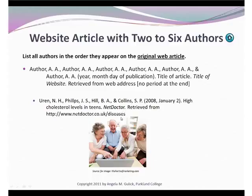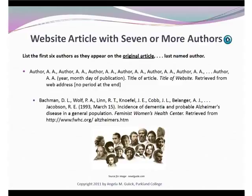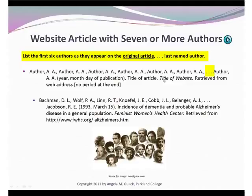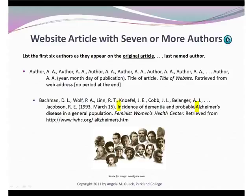What happens when you have a website article written by more than seven people? You provide the first six names that are listed as they were listed on the original. You put three periods, and then you put the last name that was listed on the article. The rest of our details are the same — date, article, website, web address. So here we have an article written by Bachman, Wolf, Lynn, Noful, Cobb, and Belanger, and then the last author listed was Jacobson. We have our date written year, month, day. Here's an example where we capitalize the first letter, but the word Alzheimer's would normally be capitalized, so we go ahead and capitalize that as well. We have the name of our website and the address from which it was retrieved.